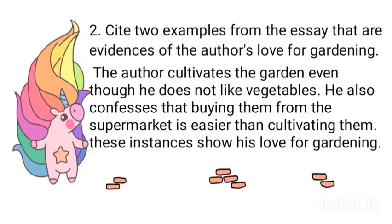Next question: cite two examples from the essay that are evidence of Arthur's love for gardening. The author cultivates the garden even though he does not like vegetables. He also confessed that buying them from the supermarket is easier than cultivating them. This instance shows his love for gardening.